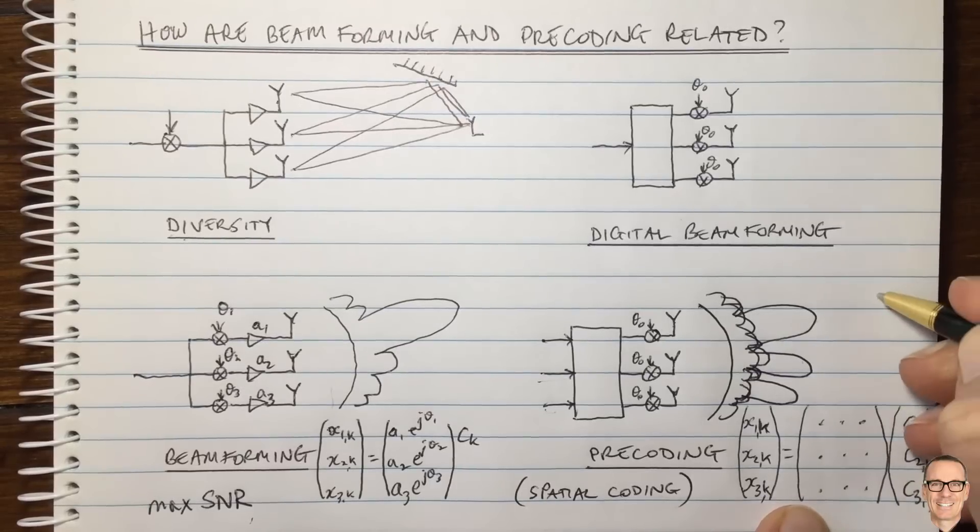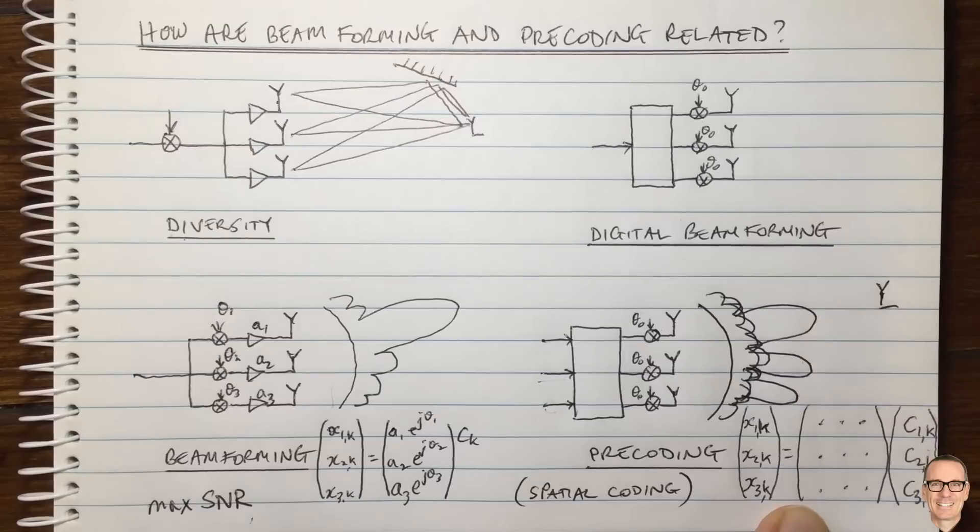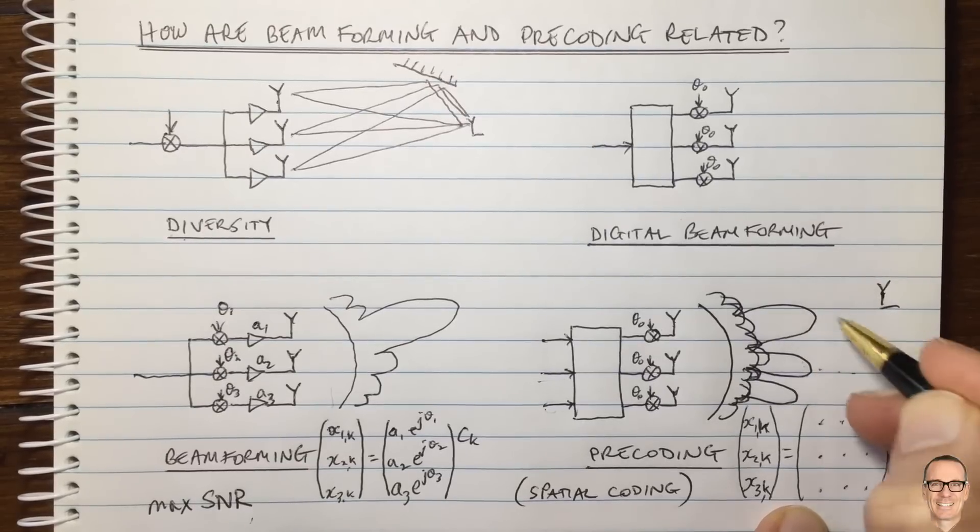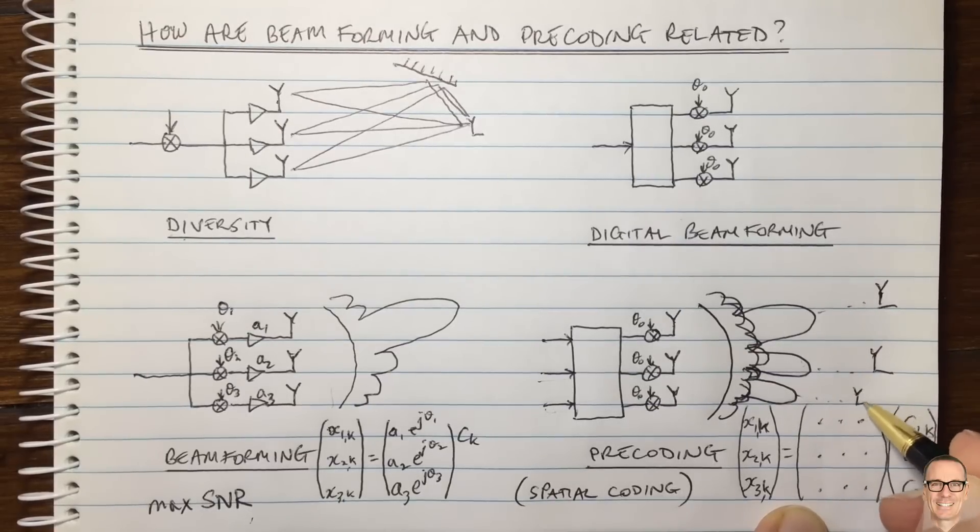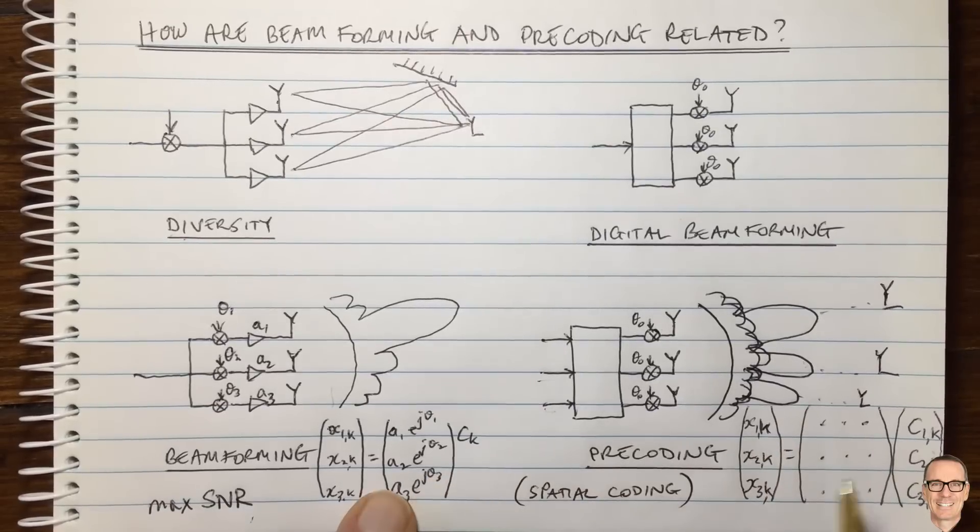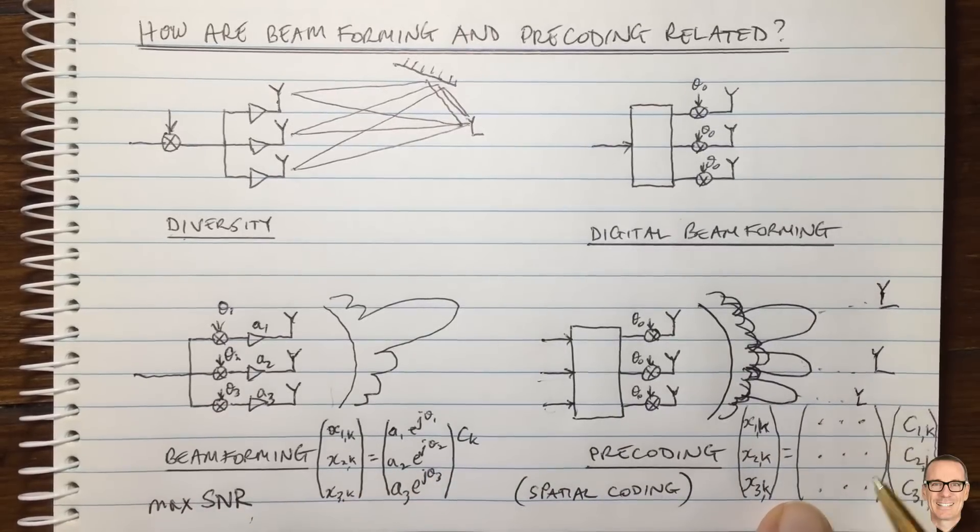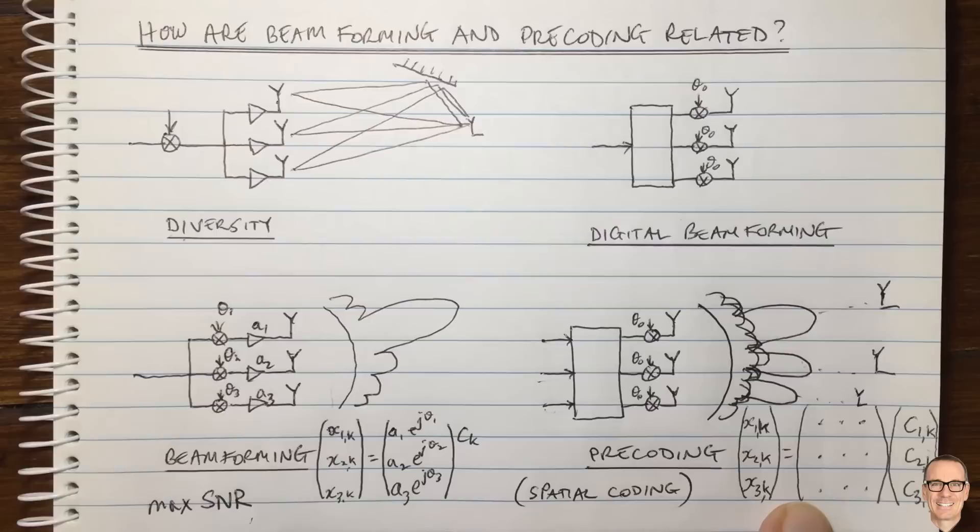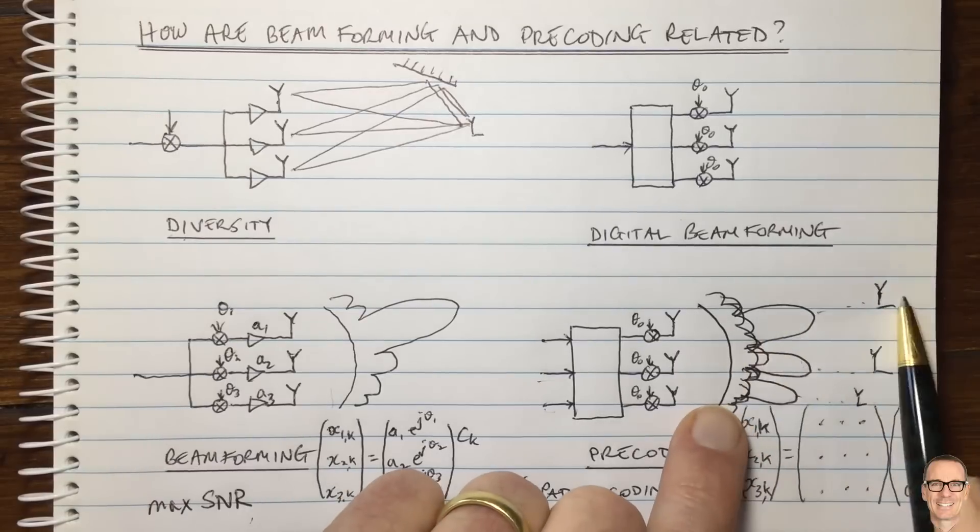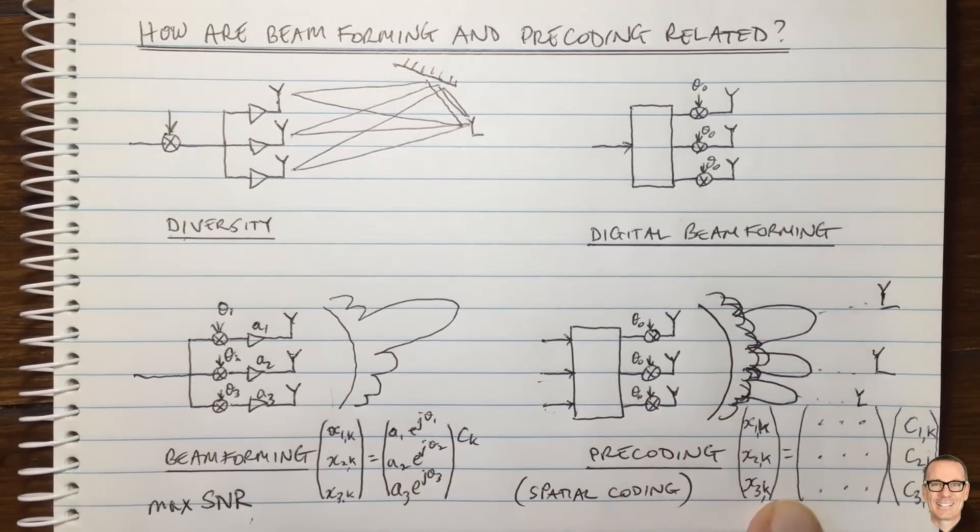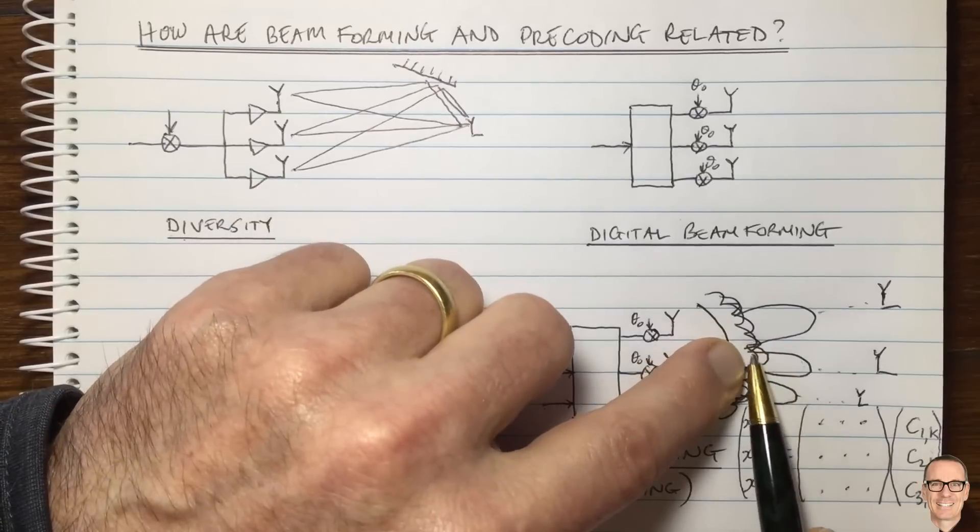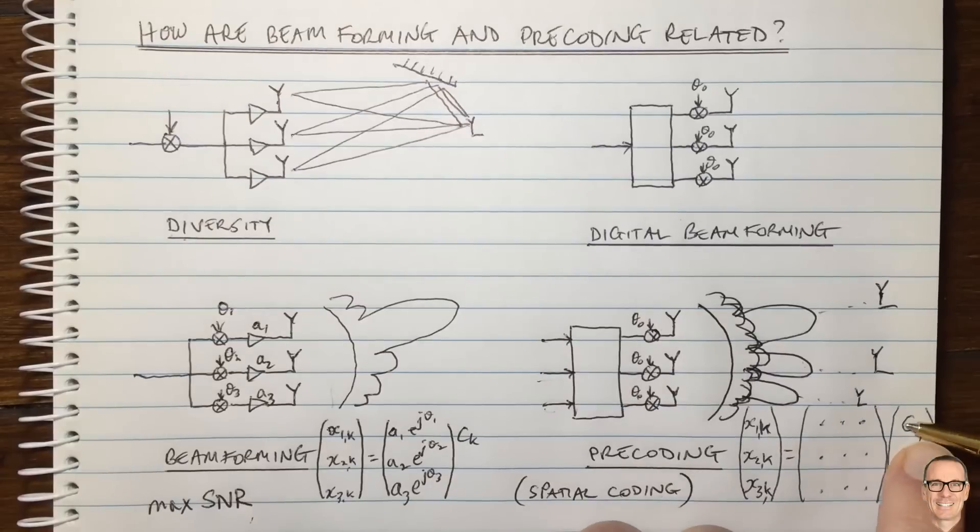But it can be much more general than simply doing the maximization of the SNR for each of the three different streams. This would be, for example, if you were using it for three different users. So this might be user one in this direction, user two in this direction, and user three over in this direction, three separate users. You could do it as I described with beams in each direction, or you could be more general in the way you select this matrix. And there are other cost functions that you can use. You can use, for example, zero forcing, where instead of maximizing the signal to noise ratio for each user...